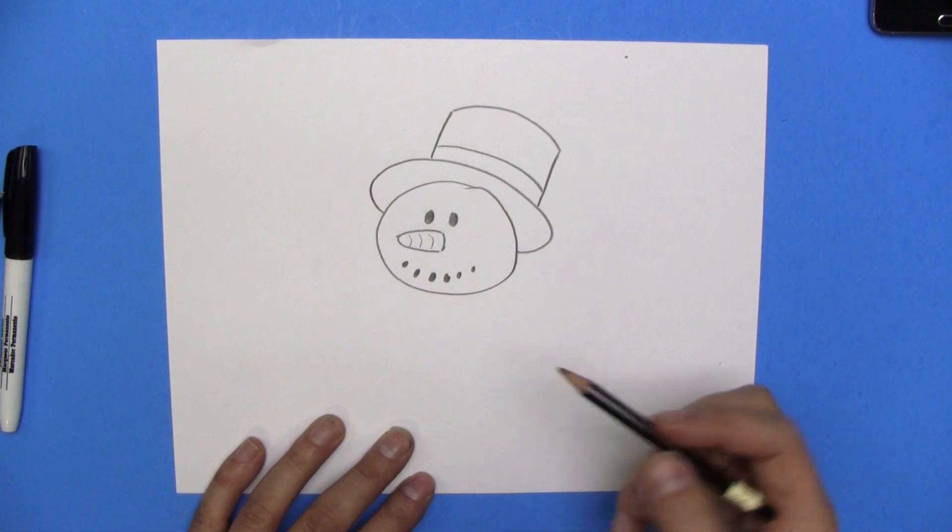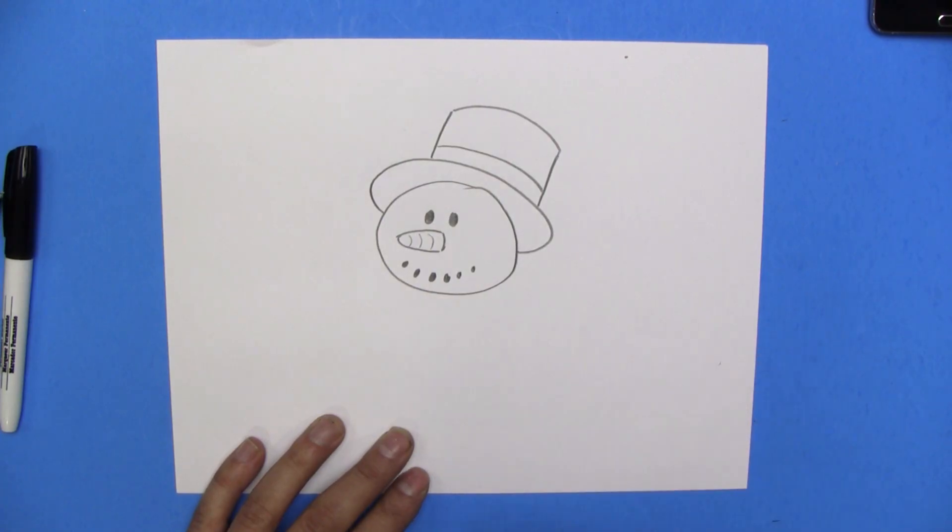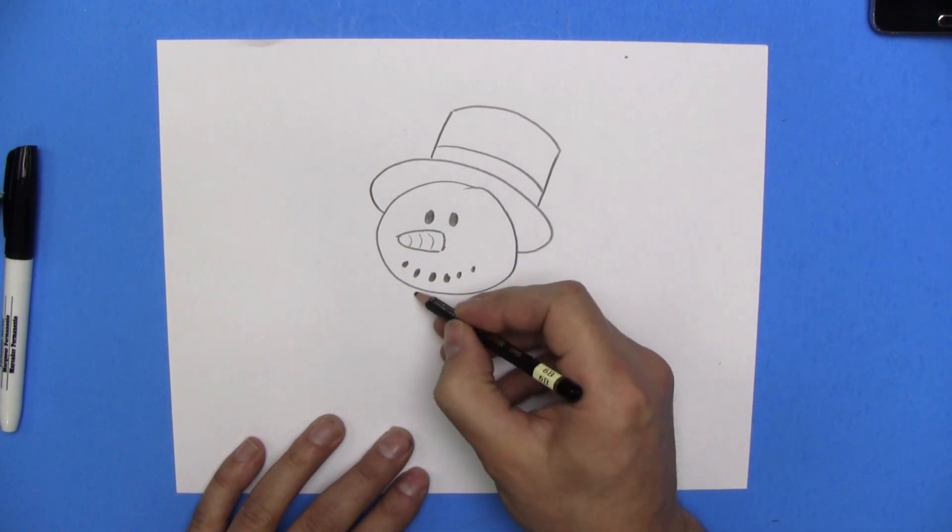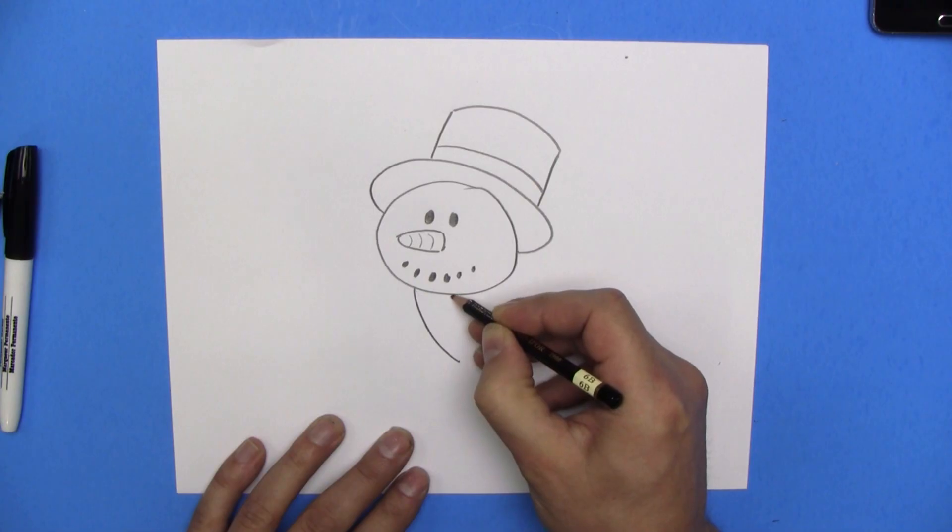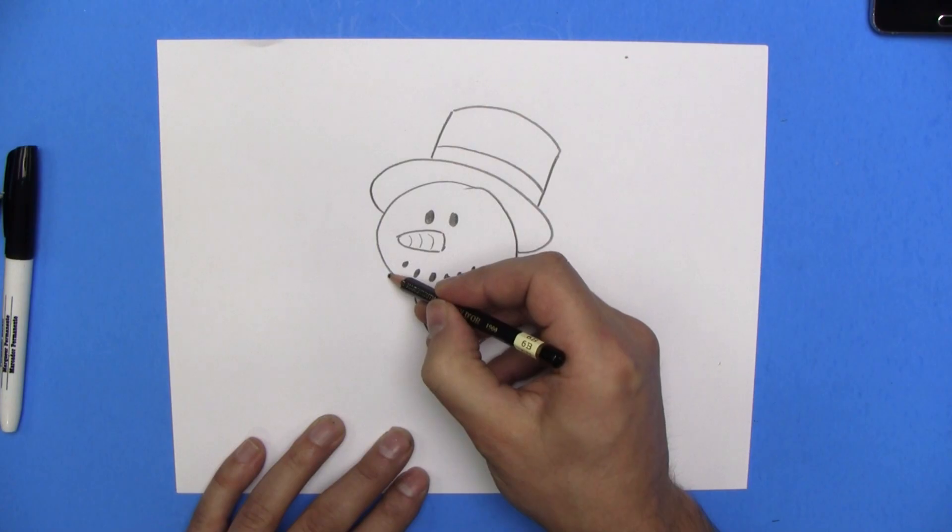Here's his smile. Now he needs a body and a scarf. So, I'm going to start by drawing the scarf right from the center here. We're going to draw a line that comes down like so.